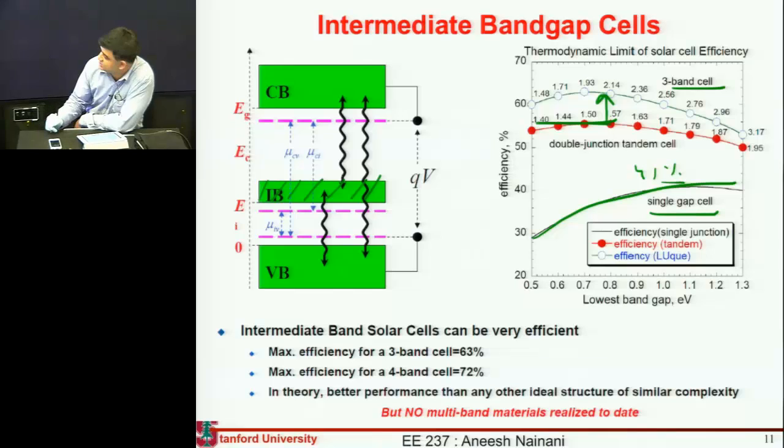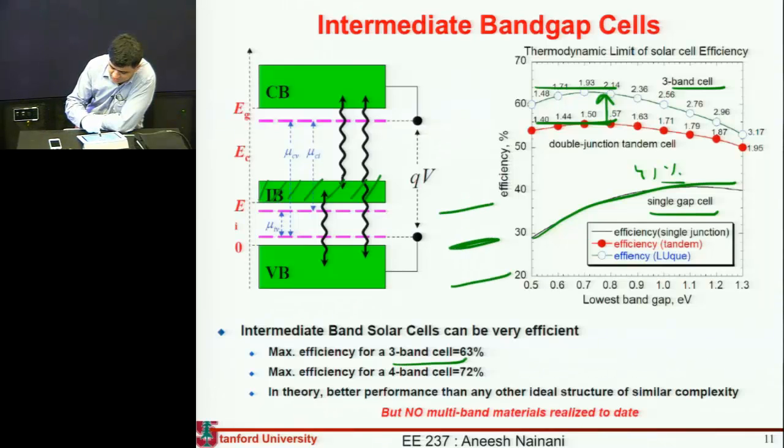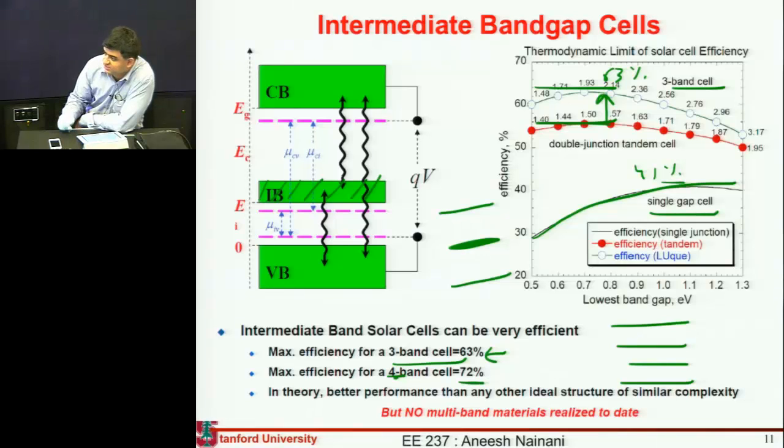But if I introduce this intermediate band as shown here, I can get much higher efficiency. So just by introducing this intermediate band, in theory you can get very high efficiency. For just a three-band cell which introduces one of these intermediate bands, you can get efficiencies as high as 63%. If you introduce two intermediate bands, so you have four bands total, you can get efficiencies all the way up to 72%.